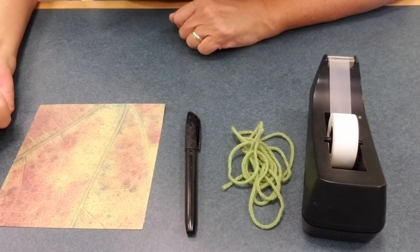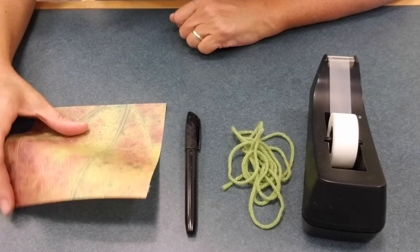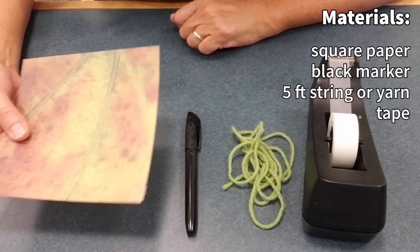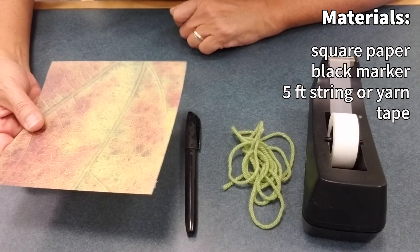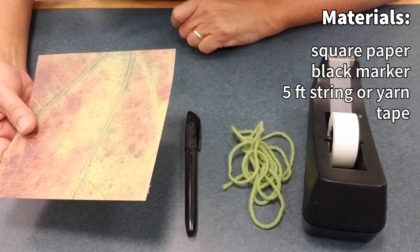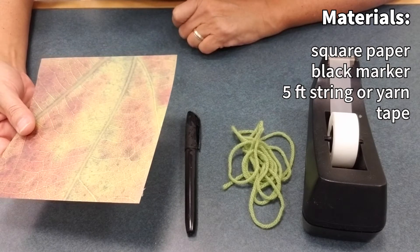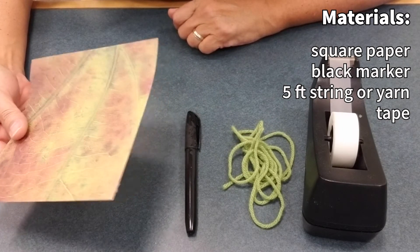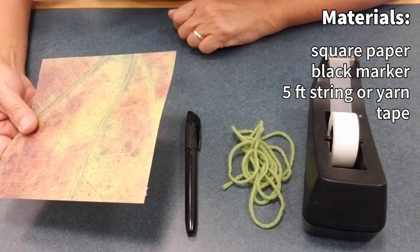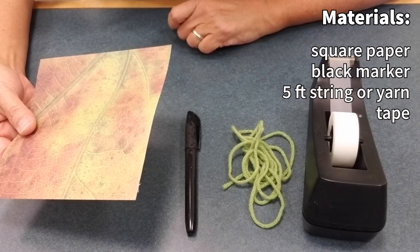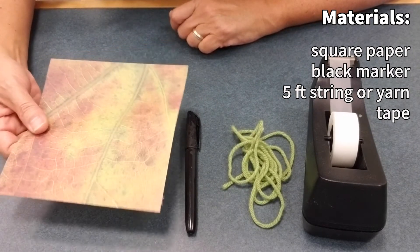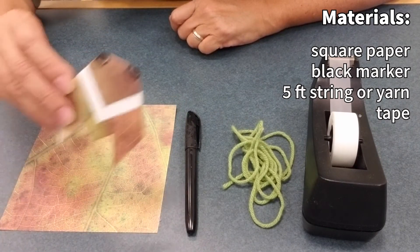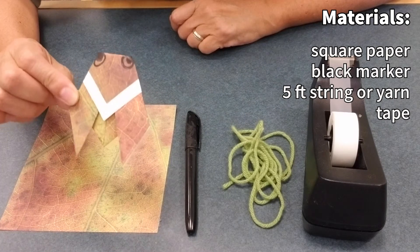All that you're going to need for this craft is a square piece of paper. I'm using a six inch square of origami paper, but you can use whatever you have around, so a piece of newspaper or book paper or wrapping paper. You just need to cut it into a square. And as I said, I'm using a six inch piece of paper and that will produce a two and a half inch cicada.